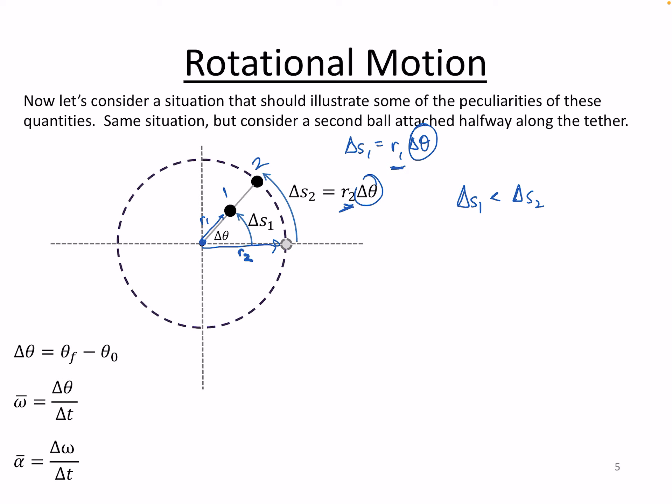And if you were to step through that logic for angular velocity and angular acceleration, well, you'd get a similar result. Because if delta theta is the same for each one, and delta t, of course, is the same for each one, well, then their rotational or angular velocity must also be the same.